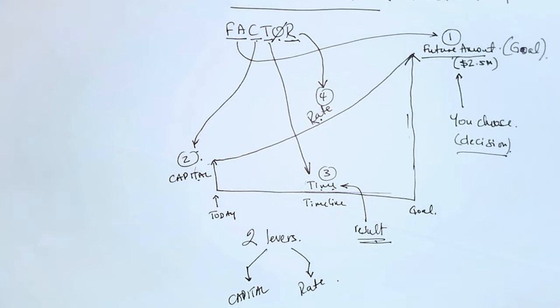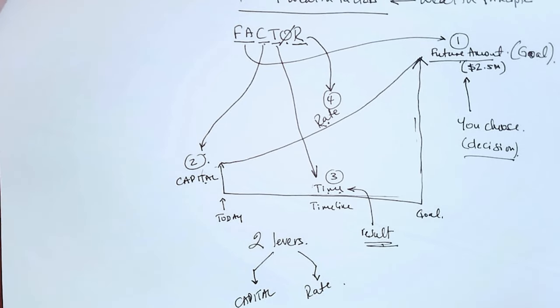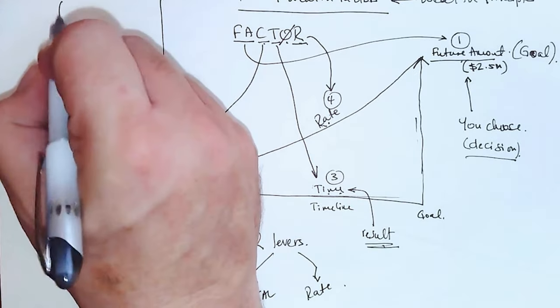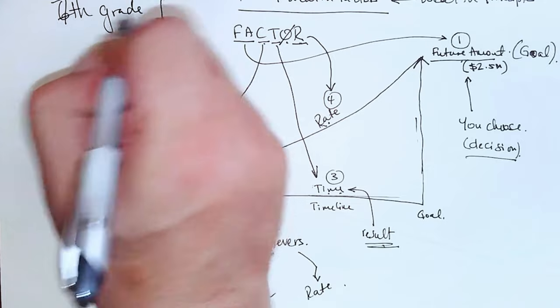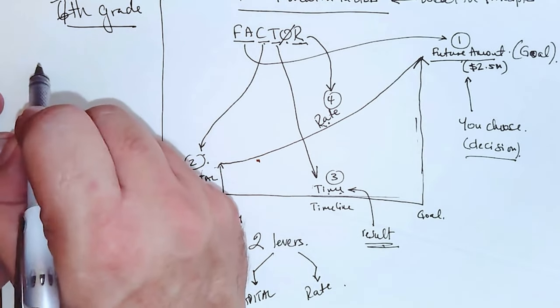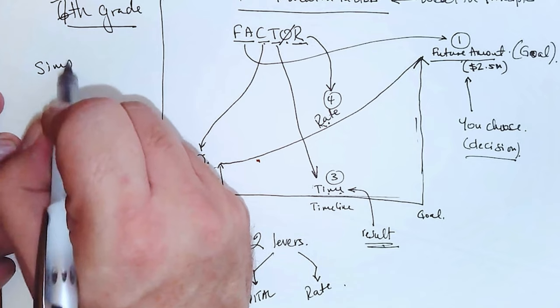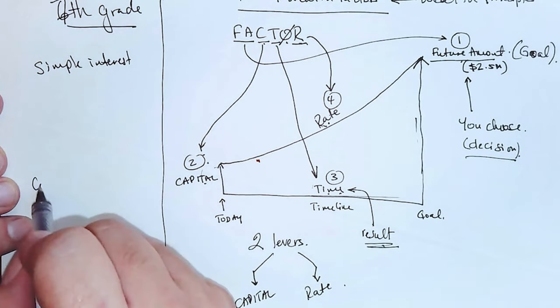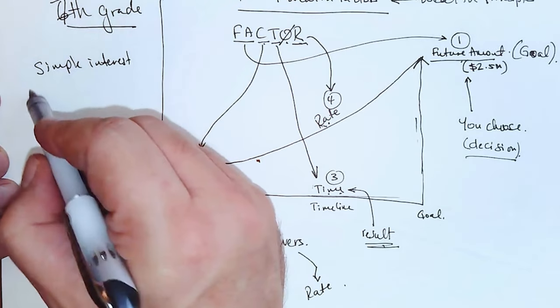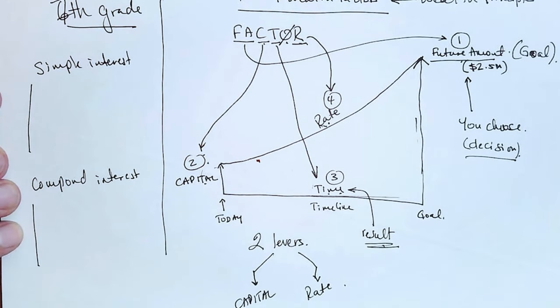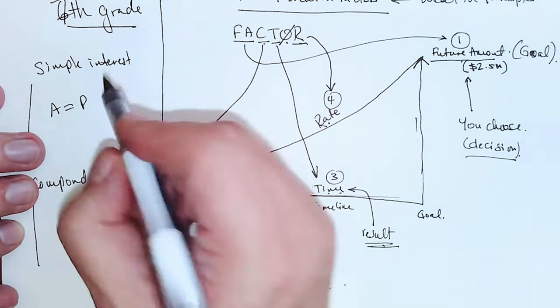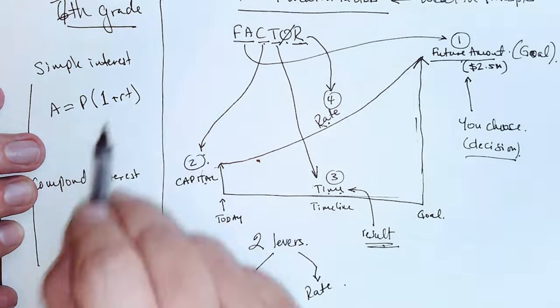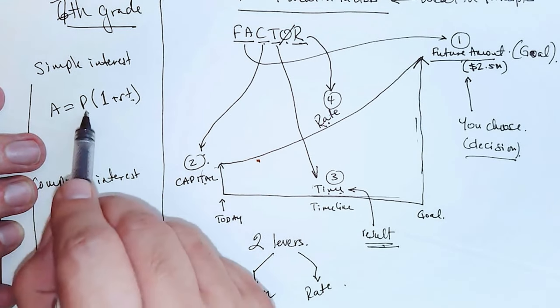Now before I proceed with this, at this point you might be wondering these sort of look familiar. So let me share with you why they look so familiar. In math, in sixth grade or seventh grade, I don't know, we learned about something called... there's two things we learned about: simple interest and compound interest. These use the same four factors. Let's look at them really quickly. You probably remember simple interest is A = P(1 + rt). R is rate, T is time, P is principle which is capital. I changed it to capital so you can remember the factor acronym. And A is future amount. Again, I changed it to future amount so we remember the acronym FACTOR.